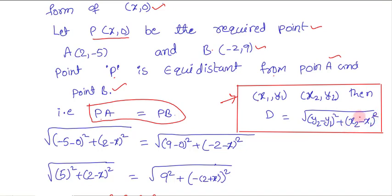Using this formula for PA: I suppose P(x, 0) as x1, y1 and A(2, -5) as x2, y2. So PA equals the square root of (-5 minus 0) whole square plus (2 minus x) whole square.